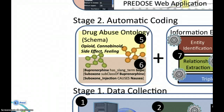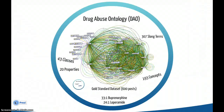Critical to the PreDose platform is a manually created drug abuse ontology, which is the first ontology developed for prescription drug abuse in the literature. The drug abuse ontology, or the DAO, provides mappings between 193 standard concepts and 307 slang references to such concepts, including "boop" for buprenorphine, "loop" for loperamide, and "subies" for Suboxone. These slang-to-drug mappings are crucial for information extraction and also for search, as demonstrated on a gold standard dataset consisting of 600 posts.